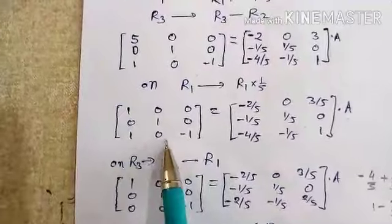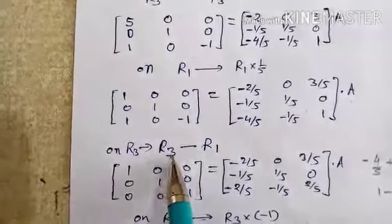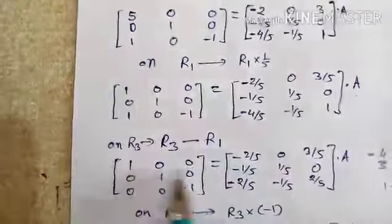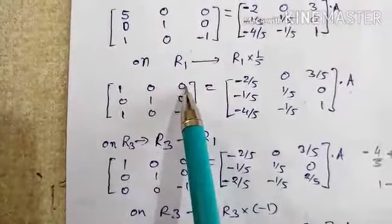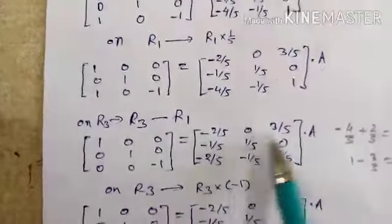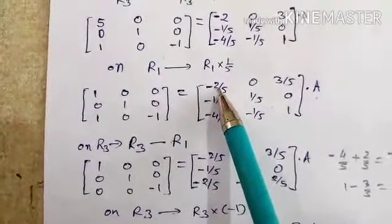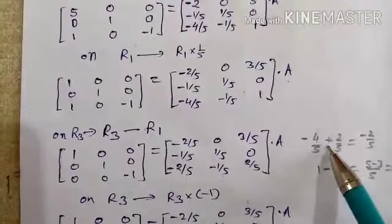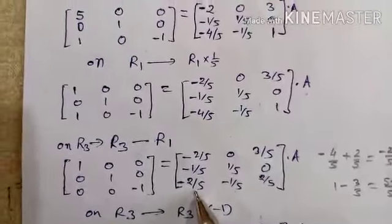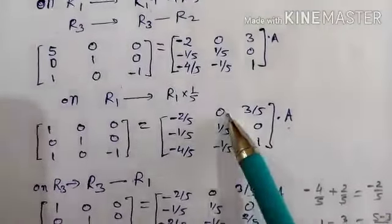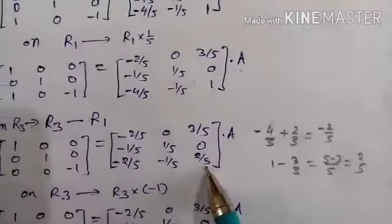Observe the matrix again. Apply R3 minus R1 — third row minus first row: 1 minus 1 is 0, 0 minus 0 is 0, minus 1 minus 0 is minus 1. The first two rows stay as they are. On the identity side, R3 minus R1: minus 4 upon 5 minus minus 2 upon 5 gives minus 2 upon 5; minus 1 upon 5 minus 0 is minus 1 upon 5; and 1 minus 3 upon 5 gives 5 minus 3 upon 5 which is 2 upon 5.